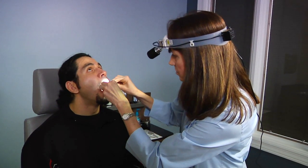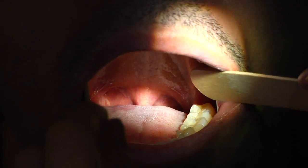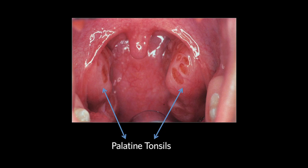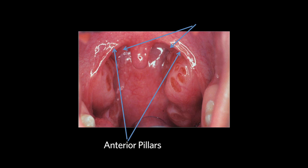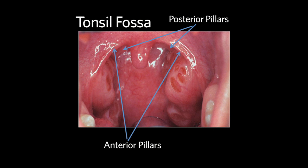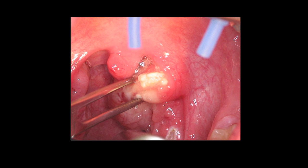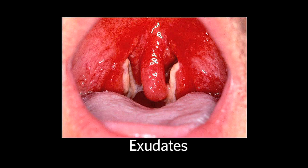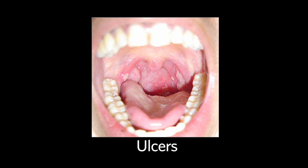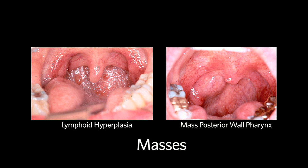Laterally, below the soft palate, sit the palatine tonsils. There is an anterior and posterior pillar that makes up the tonsil fossa. The tonsils are pink, should be symmetric, and are often cryptic. There may be debris in the tonsil — known as tonsilliths. Tonsil size is given by a one-to-four scale, and it is important to pay attention to any tonsil or oropharyngeal pathology such as exudates, ulcers, masses, or lesions of any kind.